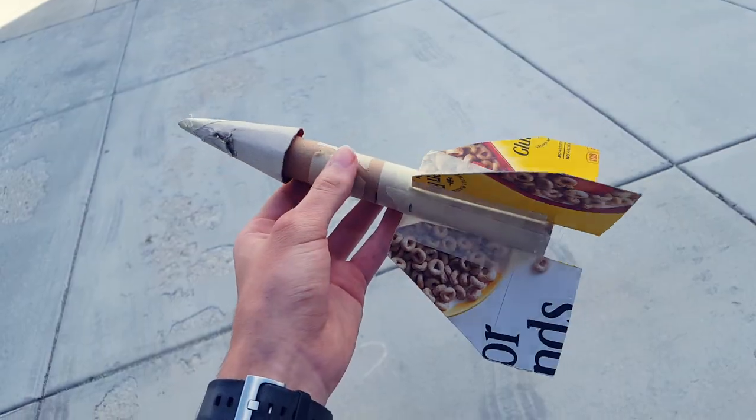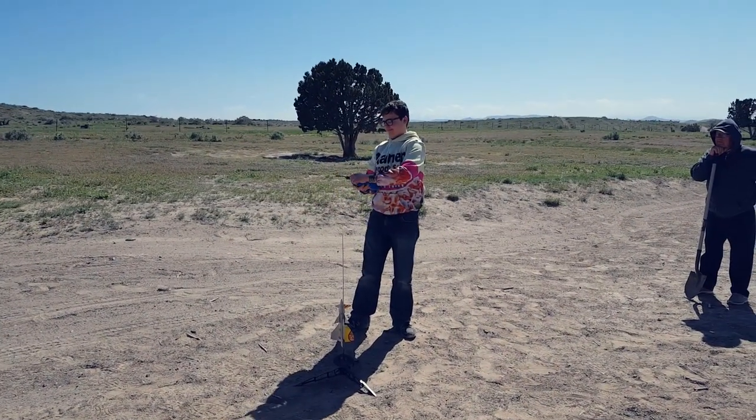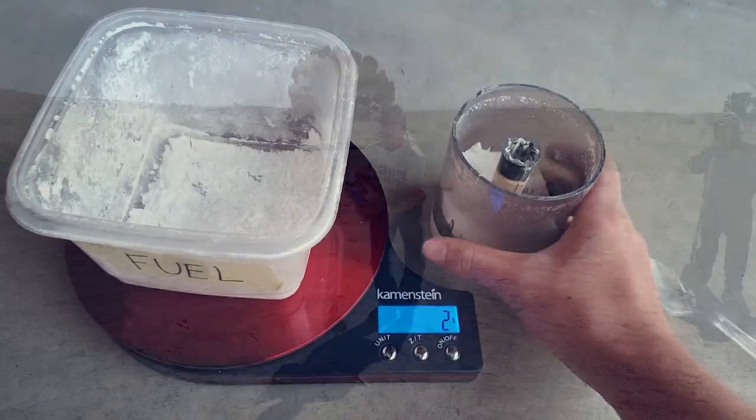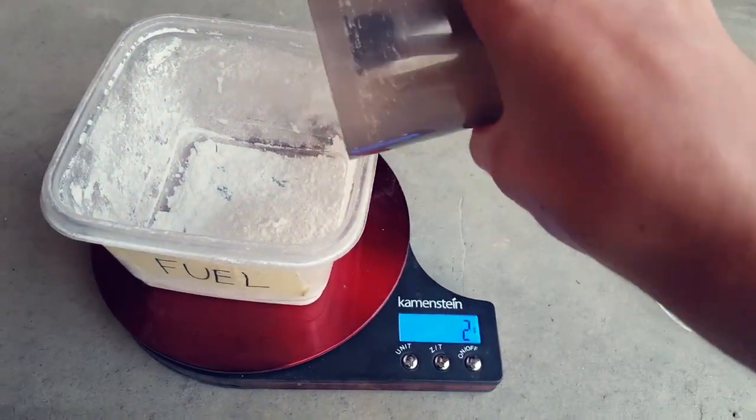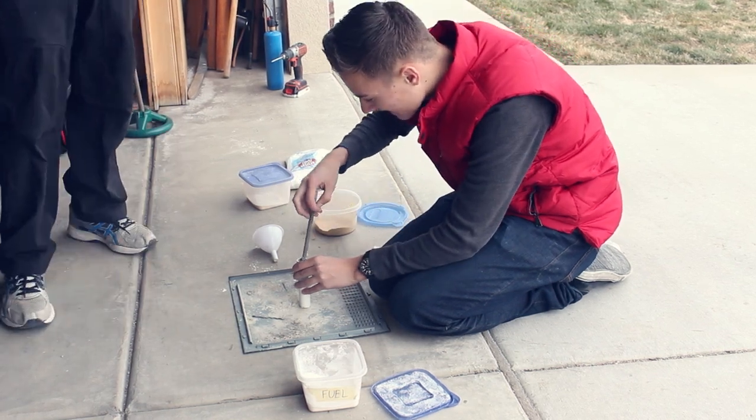And now you know how to make a rocket body out of simple household items. Make sure to leave a like and subscribe if you want more tutorials like this one. If you want to know how to make the rocket engines we use, there's a video for that. Stay tuned for more videos on rockets and other experiments in the future. See you next time.